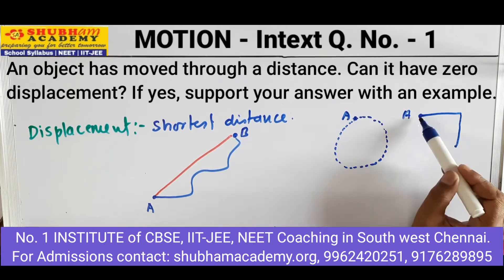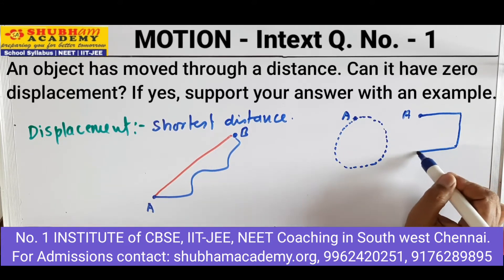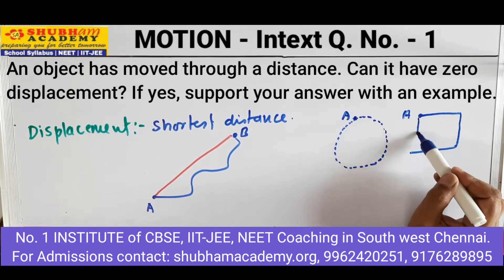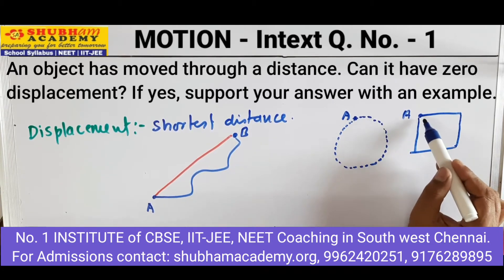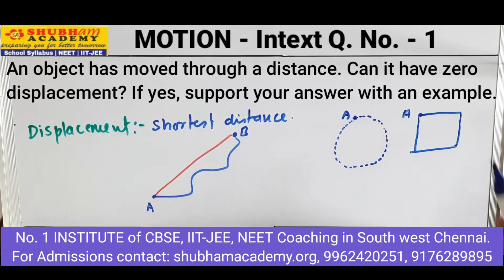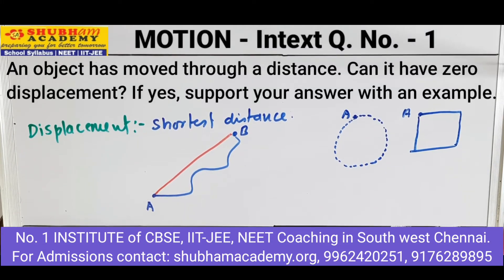Case 2: suppose the object started moving from point A, it moved along a rectangular path and came back to the same position. Again we can see that initial and final positions are same. So again in this case, displacement will be 0. What we conclude is that if the initial and final positions of the objects are same, then the displacement will be 0.